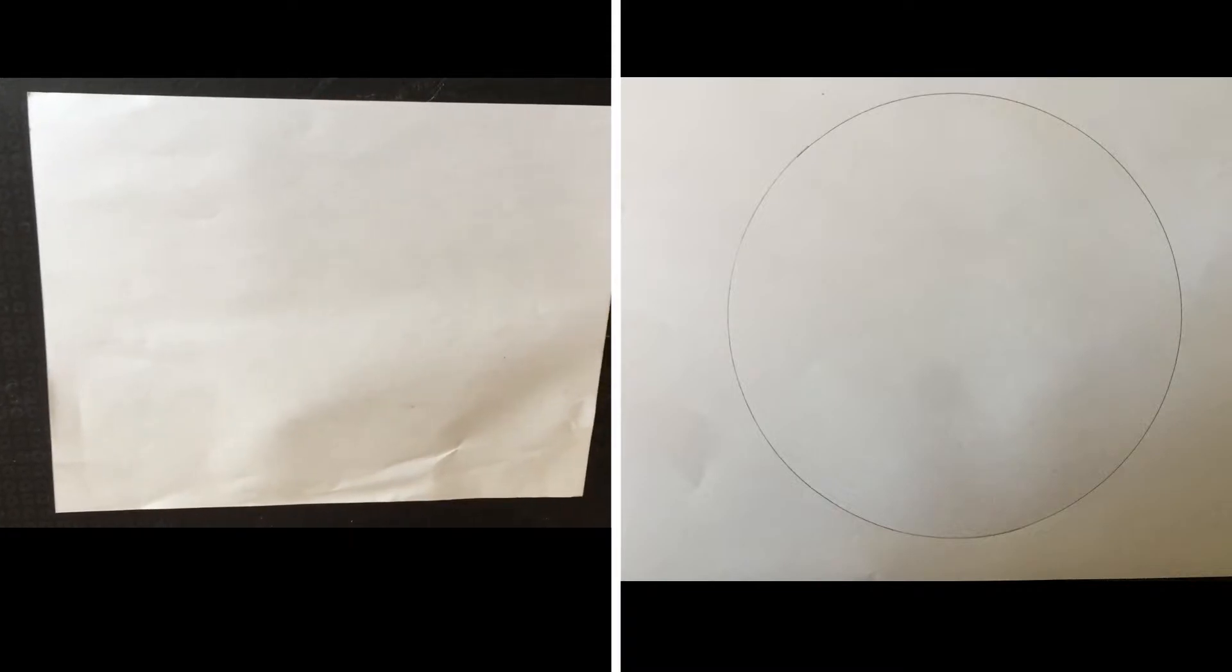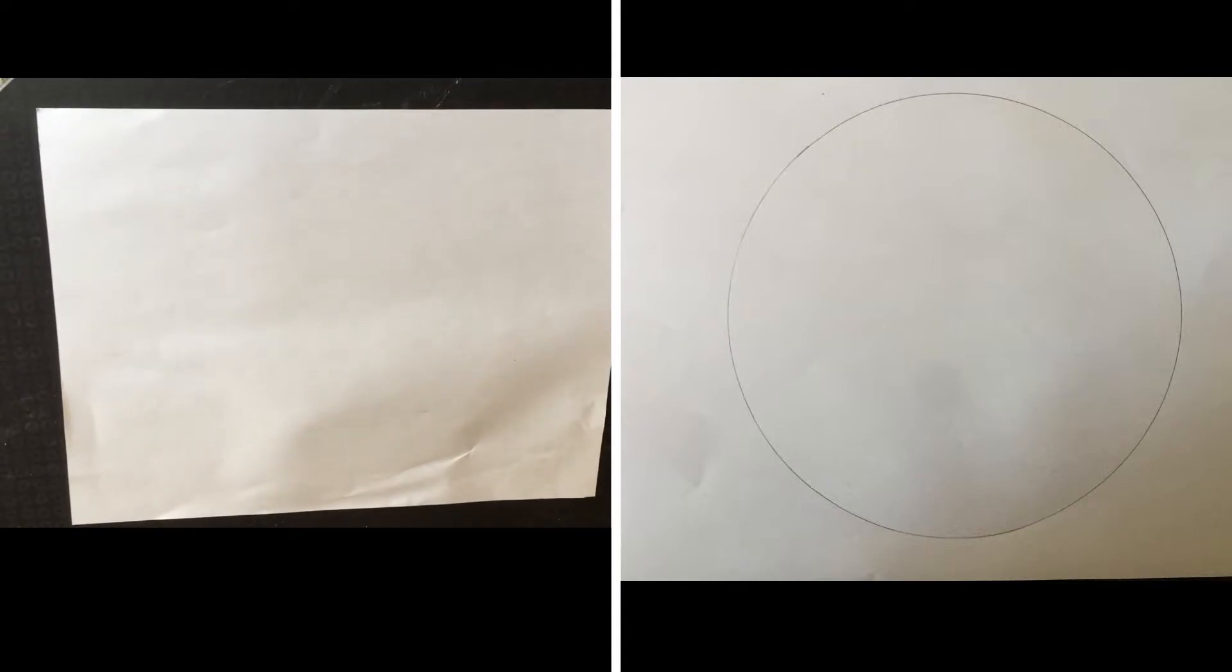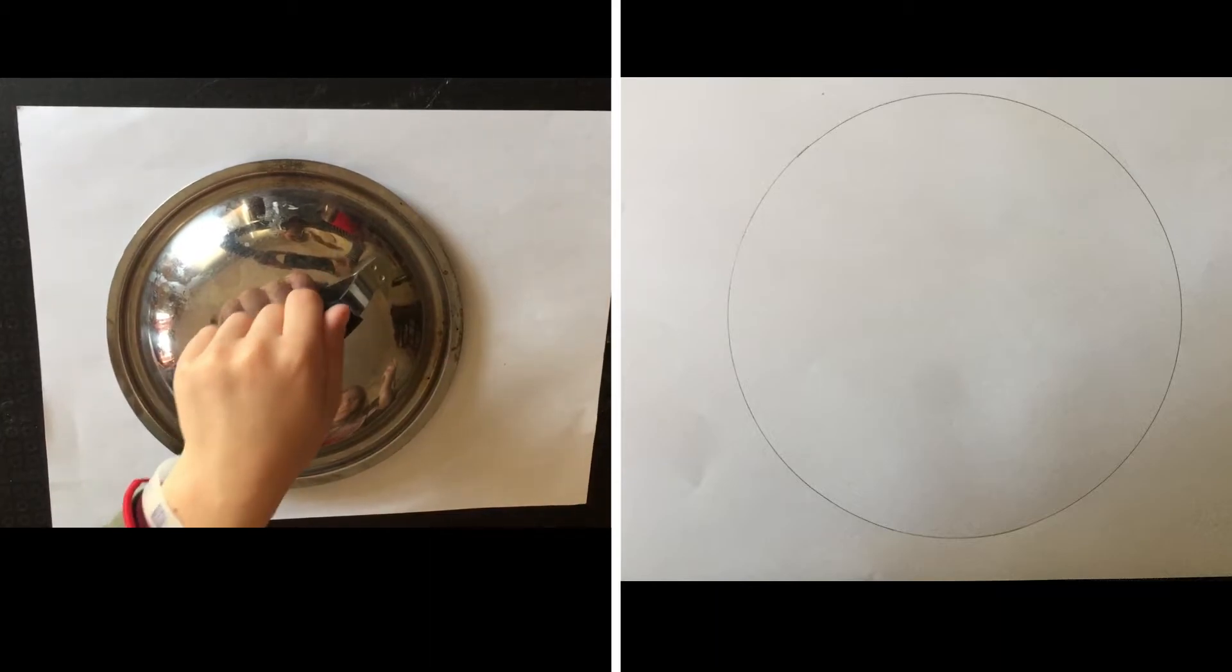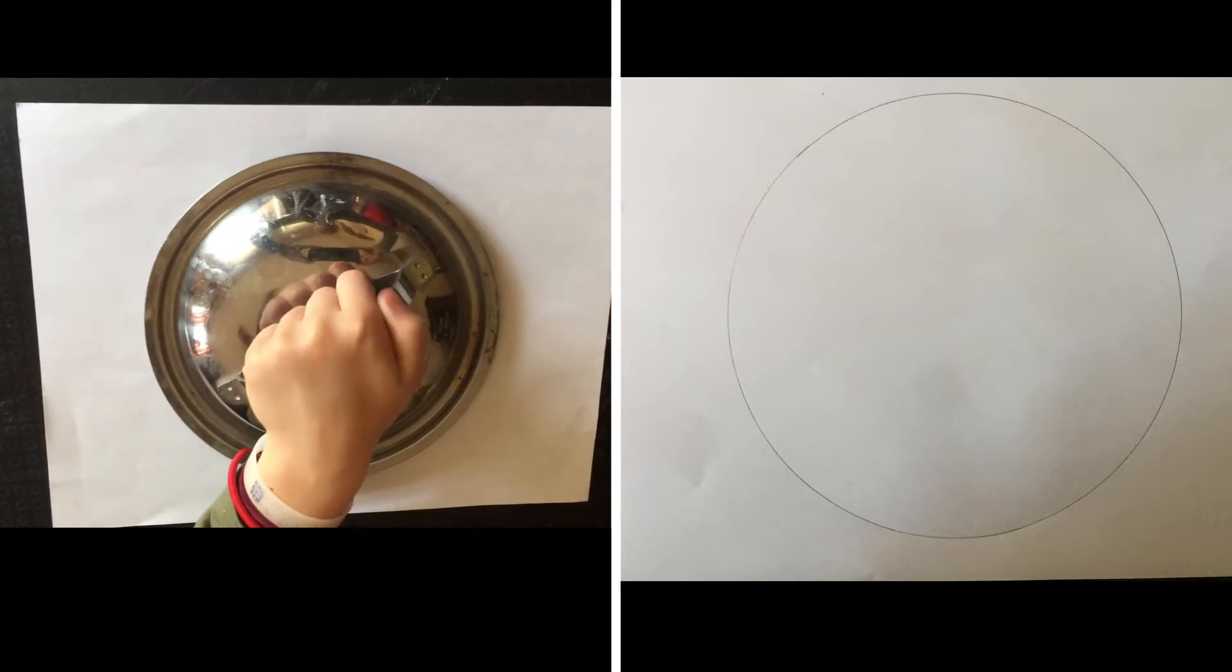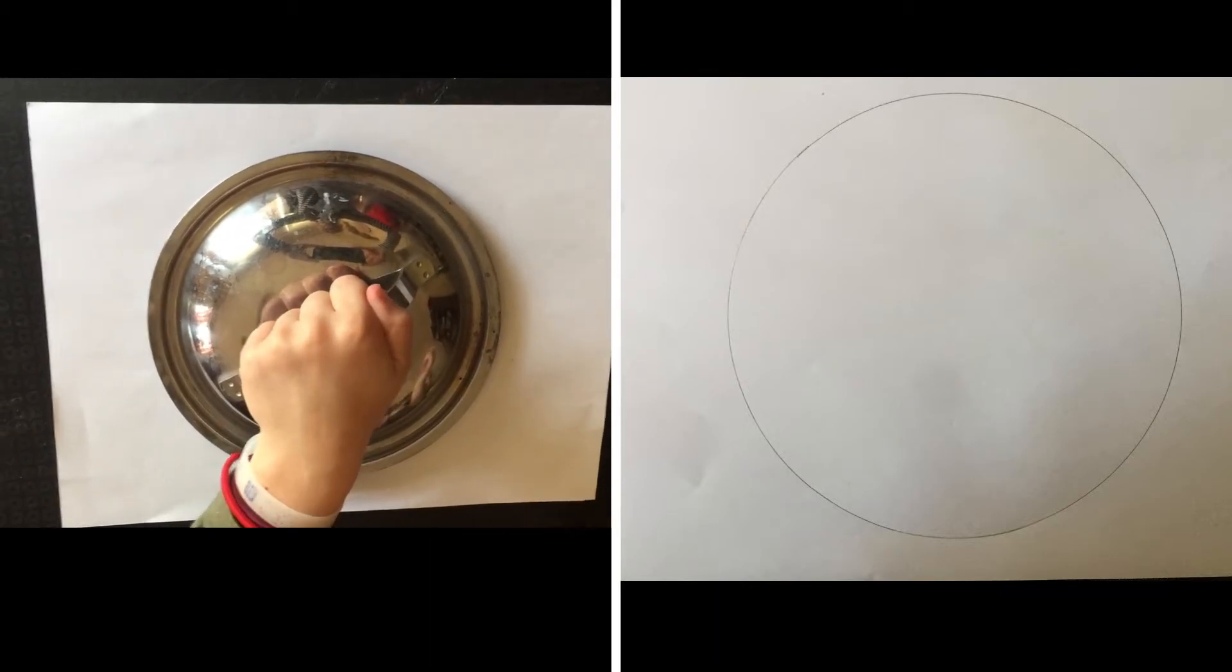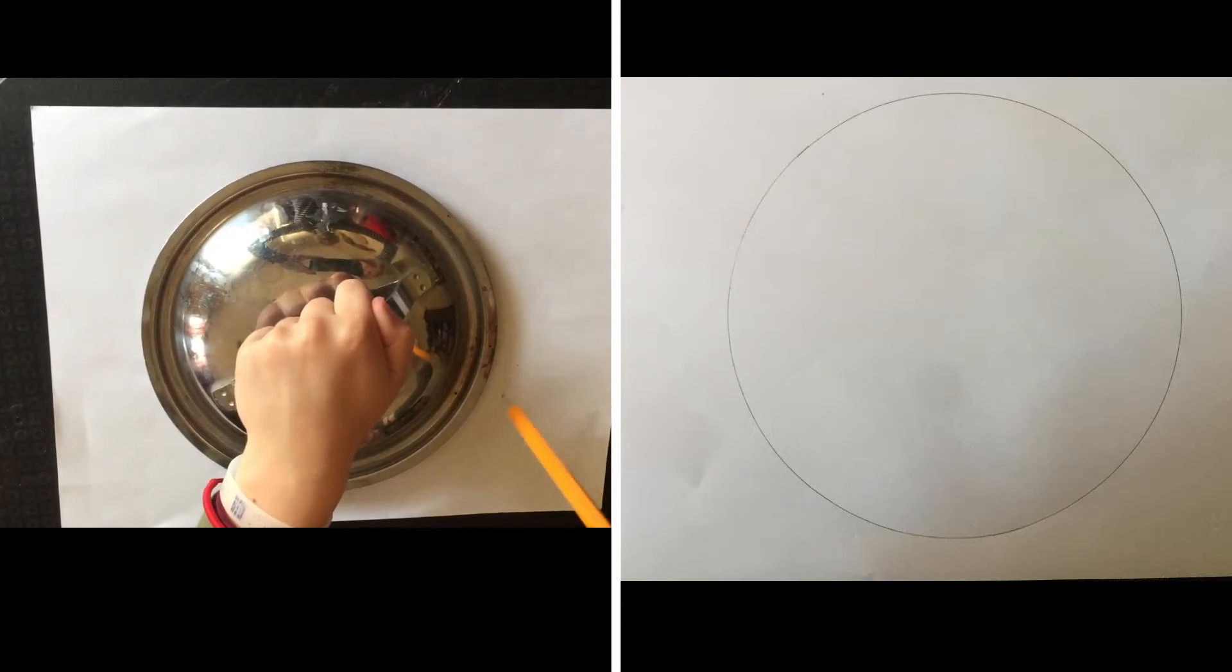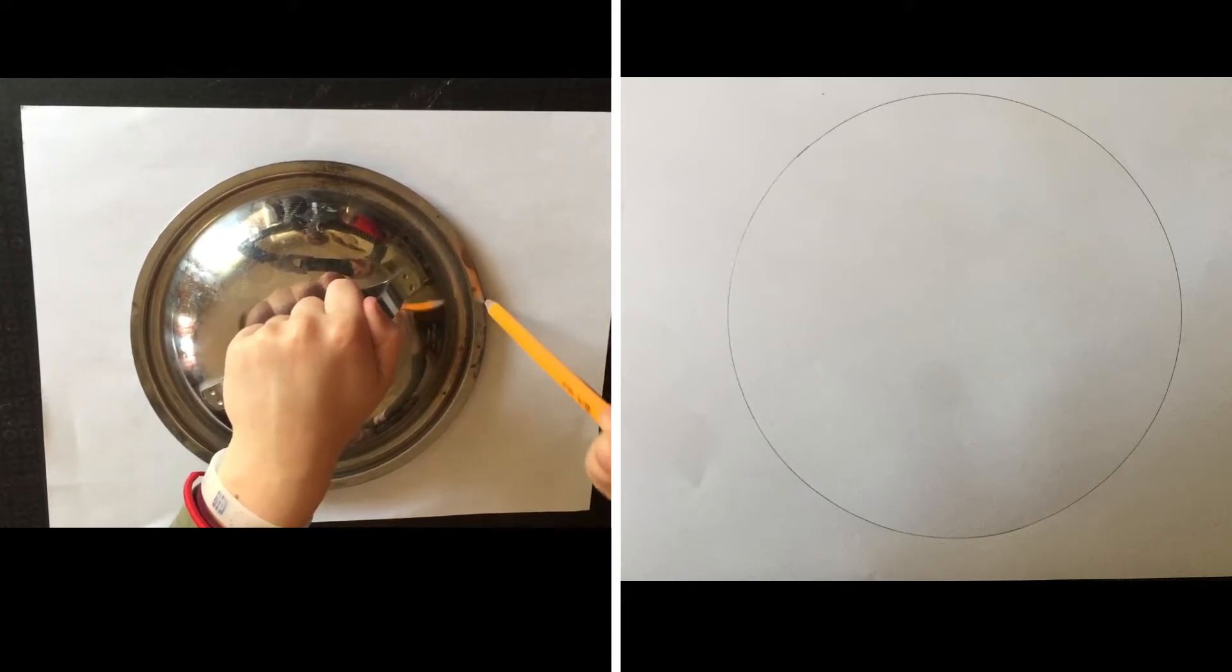Alright, today we are going to draw a piano alligator. Just like before, the first thing we're going to do is make his body with the lid of our pot. So right in the middle, put your pot lid, and be sure you have lots of space beside it and under it because we're going to be adding all the parts of the alligator. Okay, go ahead with your pencil and trace the edge of your pot.